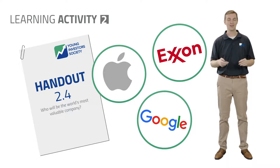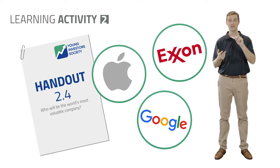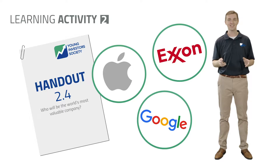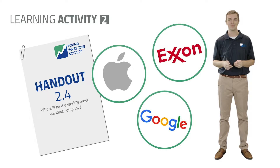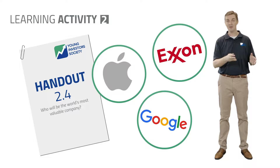Let's put it all together with an activity: the three most valuable companies in the world. This was back in 2014, so it's a bit outdated, but the lessons still apply. The three companies are Apple, Google, and Exxon. The challenge is to invest $10,000 in one of them. Looking at the numbers, Exxon Mobil has the highest revenues but also the highest costs, while Apple and Google are growing faster and have higher profit margins.